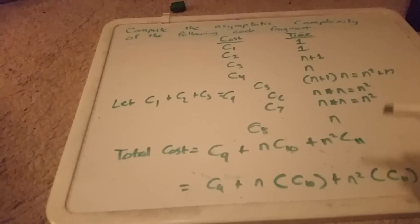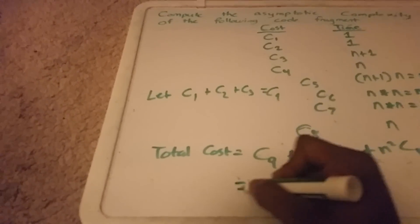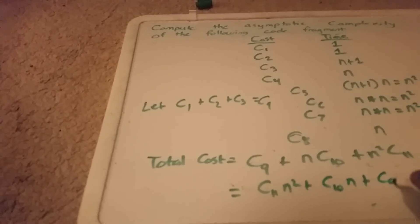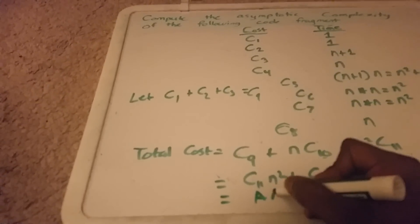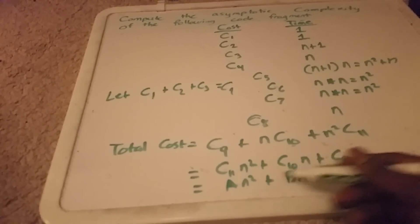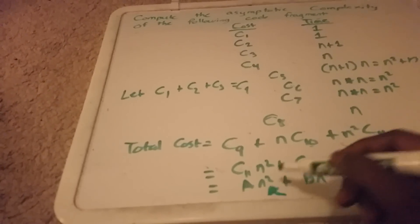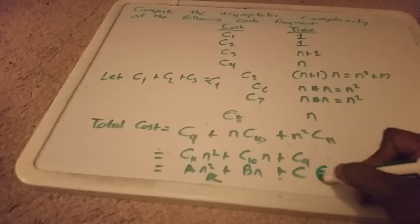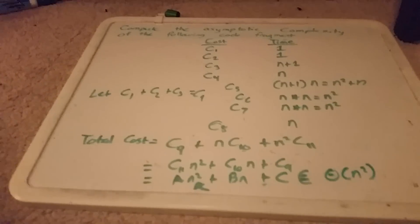This looks familiar — rewriting gives C11·n² + C10·n + C9, and replacing the constants with a, b, c gives a·n² + b·n + c. The constants don't really matter; it's the n squared term that dominates. So this running time belongs to big-theta of n squared.